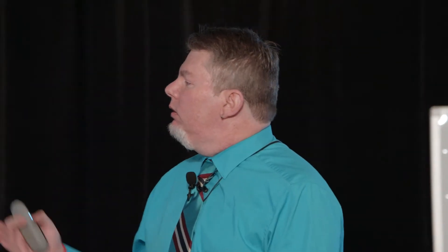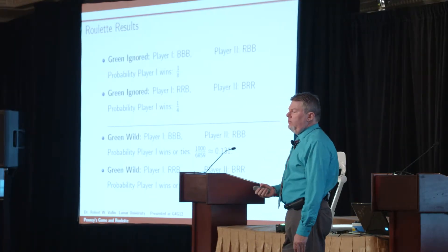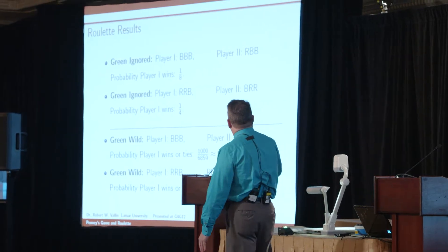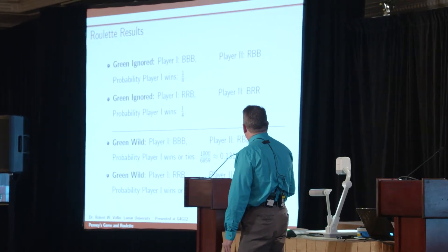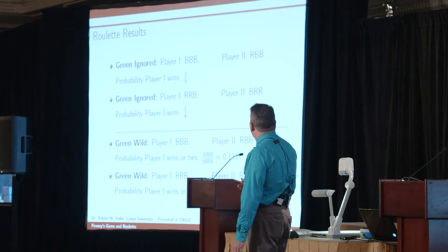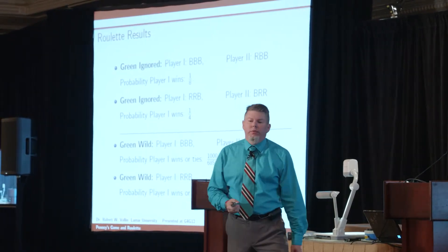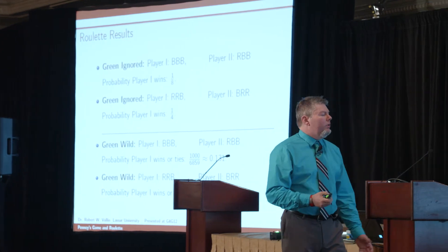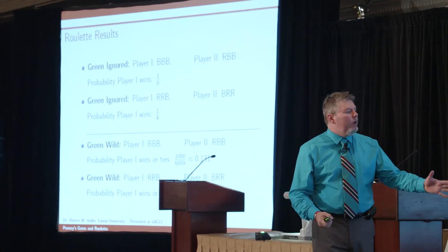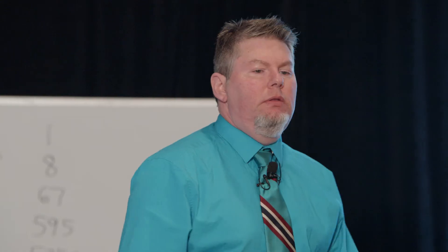On the other hand, when green is wild, there are a couple of things to look out for. You can't just ignore the green, and you can actually have a tie. For the first case where player one picks black, black, black, the probability player one wins goes up a little — it's not 0.125, it's about 0.131. For red, red, black it also goes up a little, to just more than one quarter.